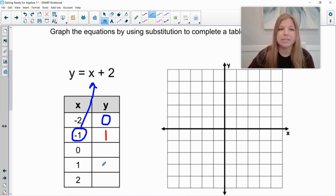And then I would keep doing the same thing with the next. I plug in a 0. What is 0 plus 2? It's 2. I plug in a 1 next. 1 plus 2 is 3. And the last one I plug in a positive 2. 2 plus 2 is 4. See how easy that was?